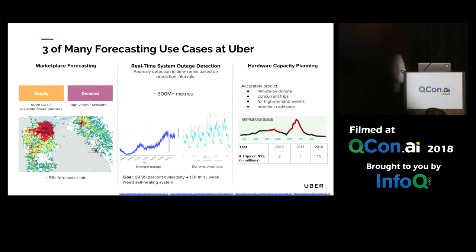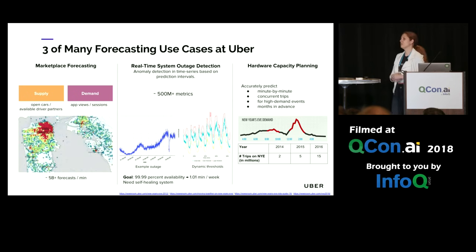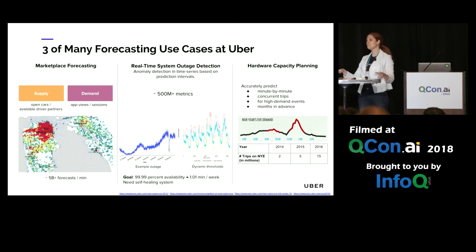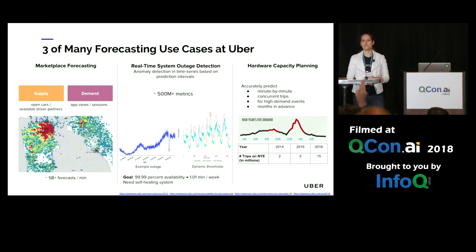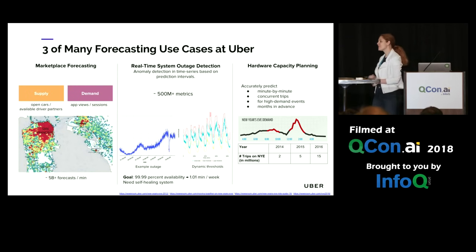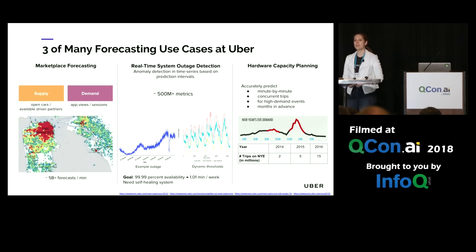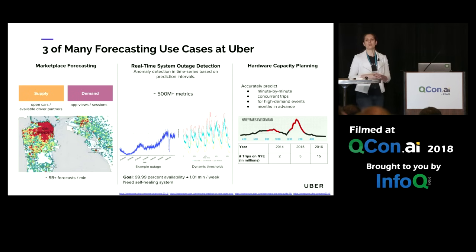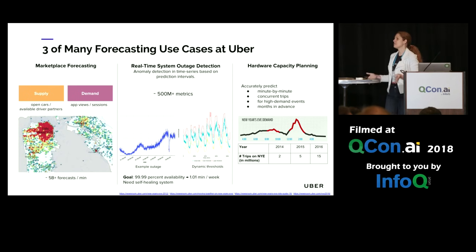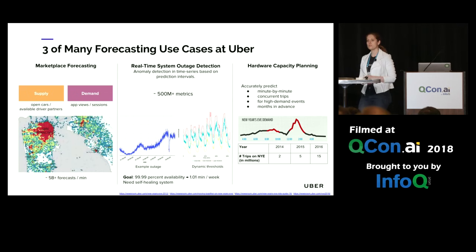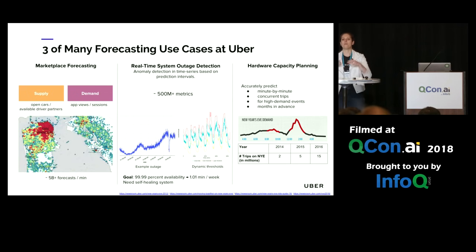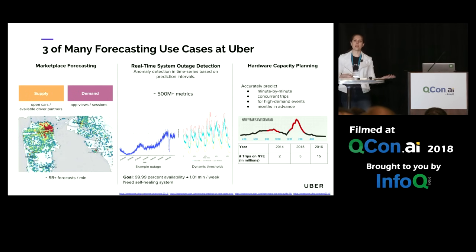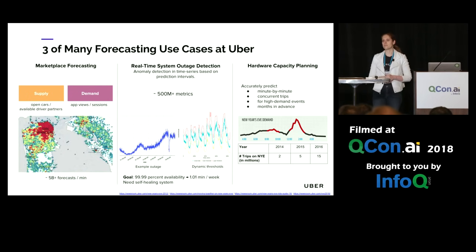We do this in order to direct driver partners into high-demand areas that will be arising shortly. The second use case is our intelligent real-time anomaly detection stack. It's pretty painful setting up alerts and getting woken up in the middle of the night just to find out it's not a true system issue. We have been working at Uber on cutting-edge forecasting techniques that successfully give extremely high signal-to-noise ratios, and we can track various time series — both backend and consumer-facing — at scale.